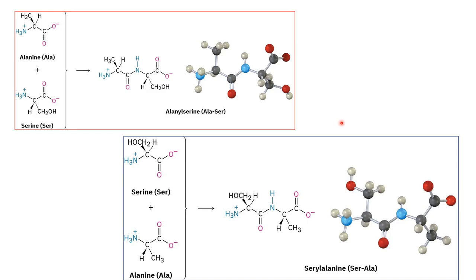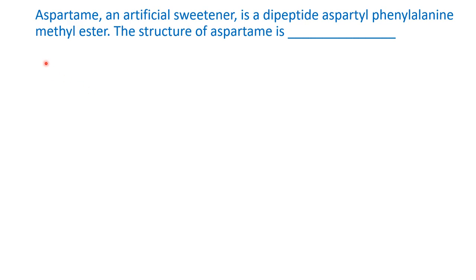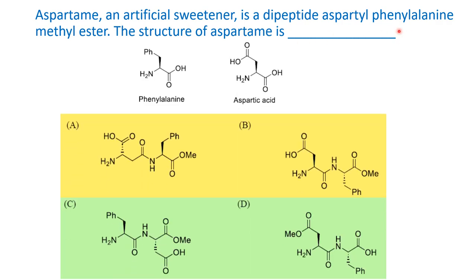Now let us go back to our question. The name is already given and we must identify the correct structure. We must keep in mind that aspartic acid is a dicarboxylic acid — it has one carboxylic acid here and another carboxylic acid. All naturally occurring amino acids are alpha amino acids, meaning the amino group and the carboxylic group are both on the alpha carbon, which is also a chiral carbon.